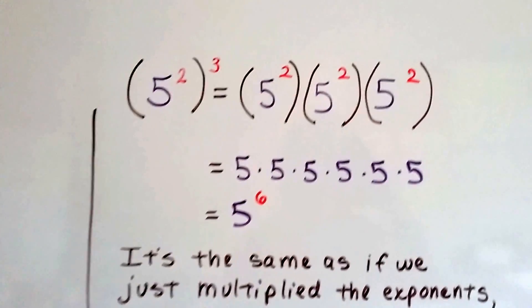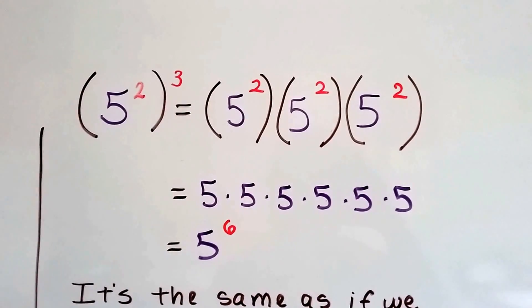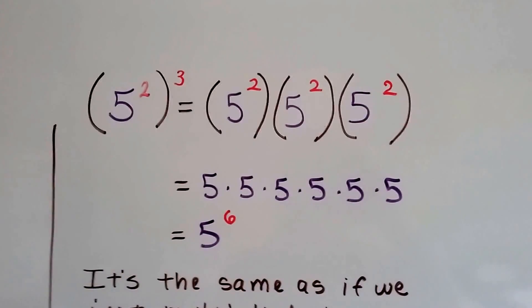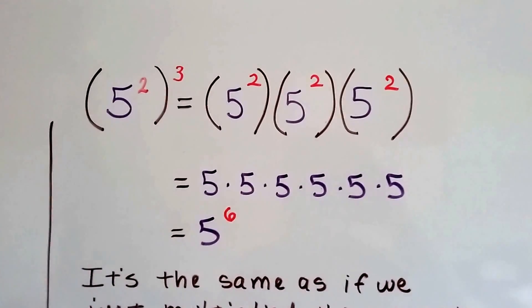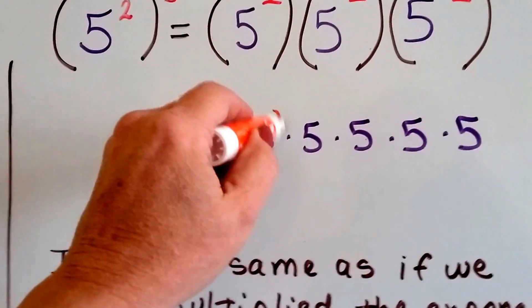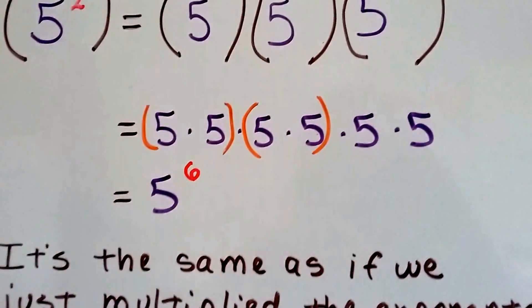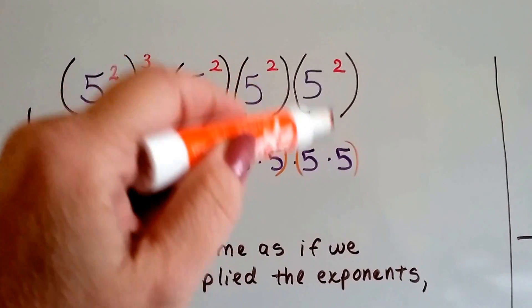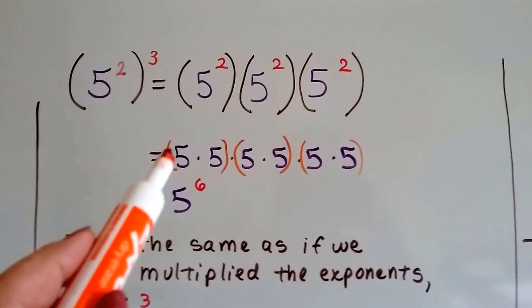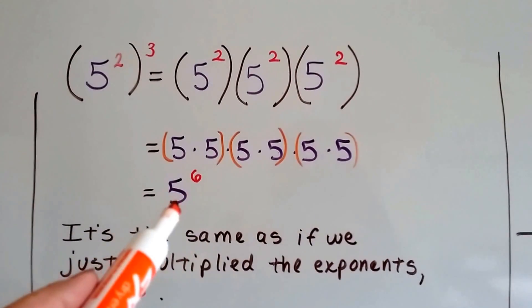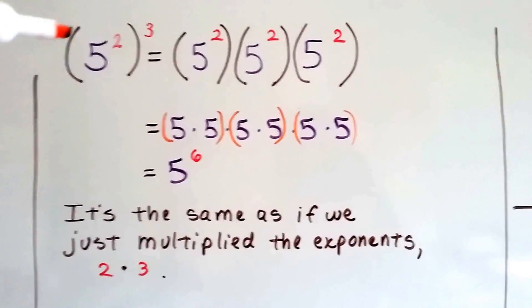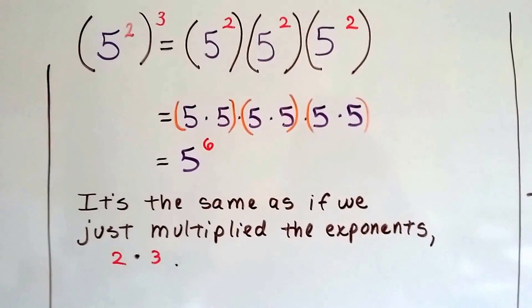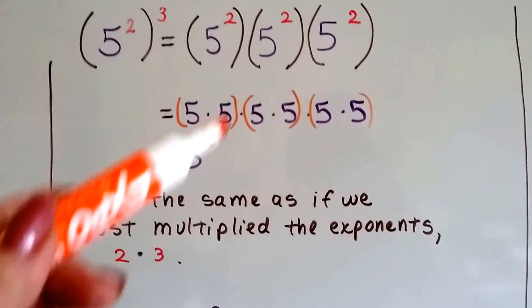Let's take a look at this one. We've got five to the second power to the third power. That means we've got five to the second power times five to the second power times five to the second power — three of them. It would be five times five times five times five times five times five — six of them — five to the sixth power. So it's the same as if we just multiplied the exponents: two times three gives us five to the sixth power. Isn't that quicker than counting all the fives?